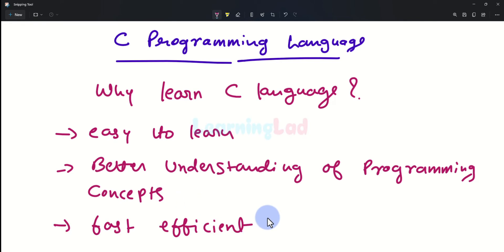And also C is one of the fastest and most efficient programming languages available. C is widely used whenever we have less resources available and we have to write efficient programs. For example, in embedded devices, C language is widely used.